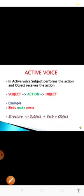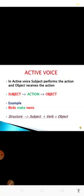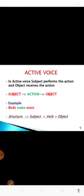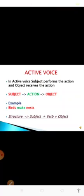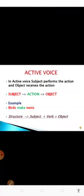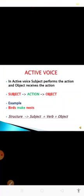In active voice, the sentence structure is very clear: subject, verb, and object. The subject performs the action and the object receives the action. For example, 'Birds make nests' — birds is the subject, make is the verb, and nests is the object. The sentence structure is very simple: subject, verb, and object.